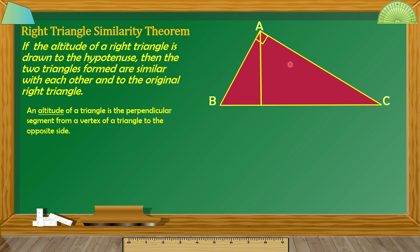Mag-draw tayo ng Altitude dyan. An altitude of a Triangle is the perpendicular segment from a Vertex of a Triangle to the opposite side. So, kapag sinabi natin yung Altitude, ito yung segment magmula dun sa Vertex ng isang Triangle. Mag-umpisa tayo dito sa Vertex ng Right Angle, dito sa Vertex A. Mag-draw tayo ng segment papunta dito sa opposite side niya, which is side BC. And based dyan sa definition ng Altitude, perpendicular yan dito sa side na ito. So, ibig sabihin yan, yung mga bubuong angle dito ay Right Angles.